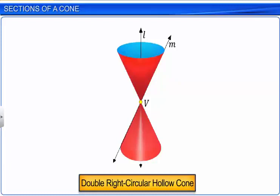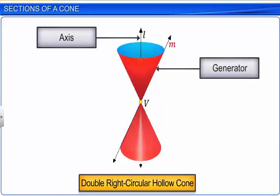Let us identify the different parts of a cone. The fixed vertical line passing through the center of the cone is called its axis. The rotating line M that generates the surface of the cone is called the generator. The fixed point at which the generator cuts the axis is called the vertex of the cone.